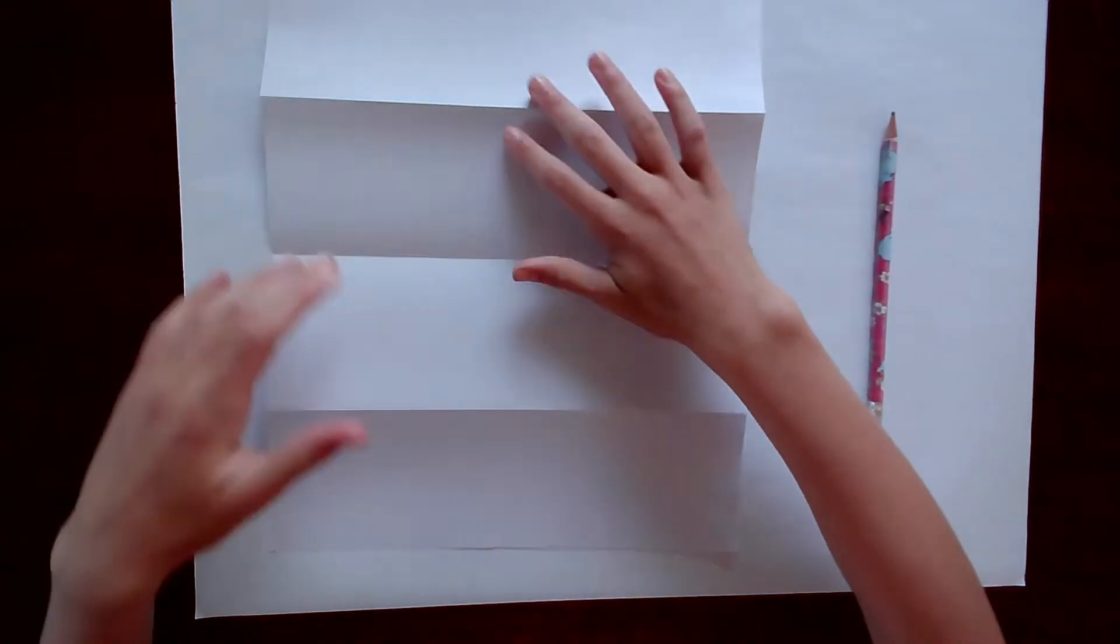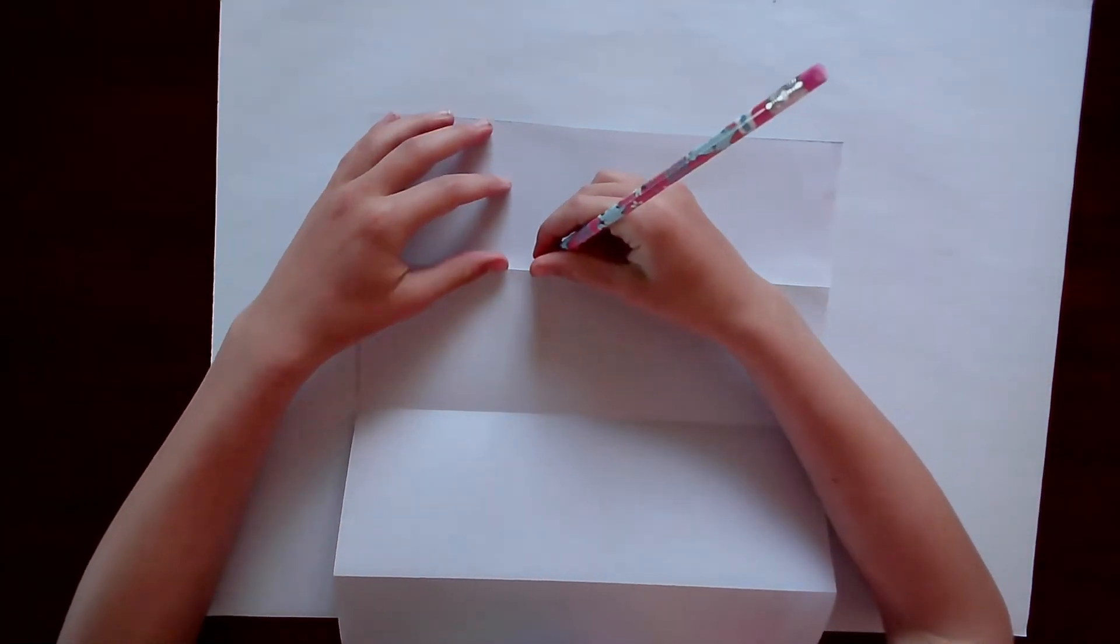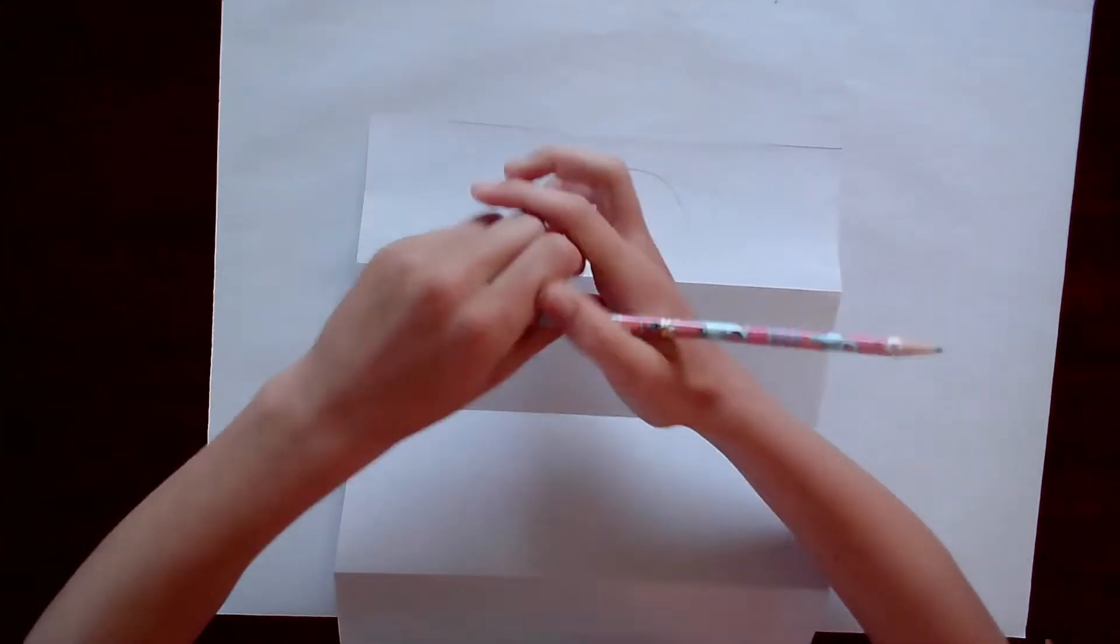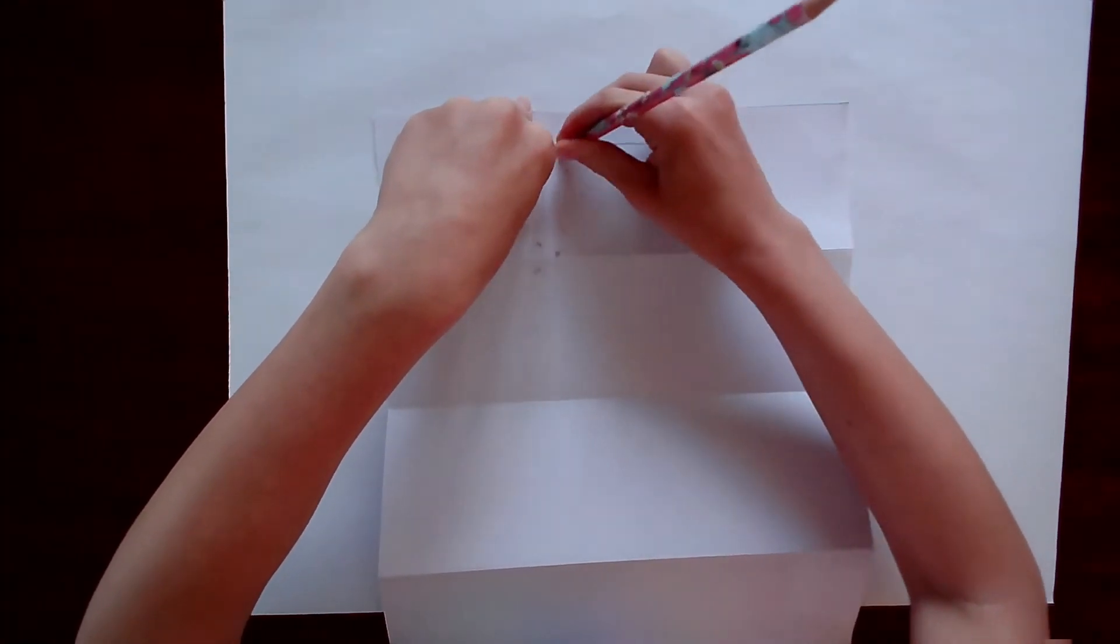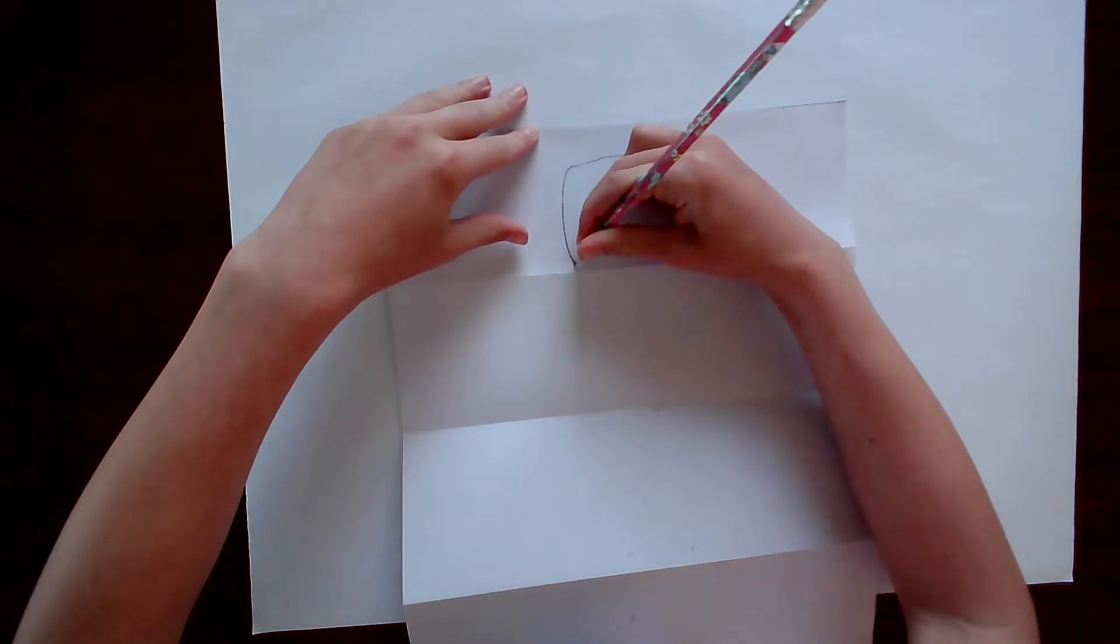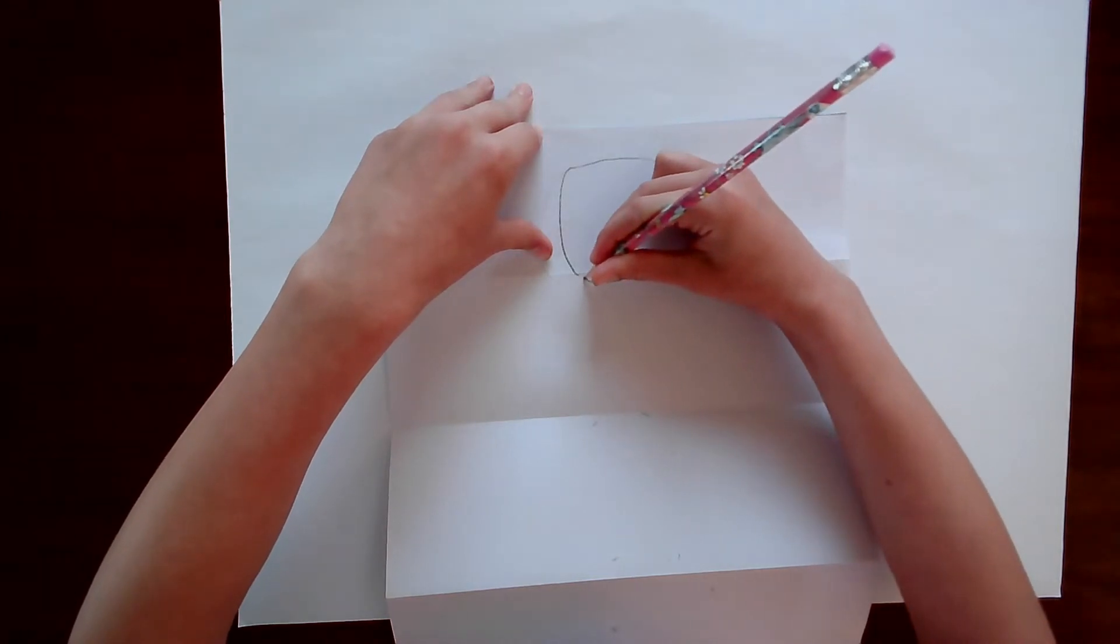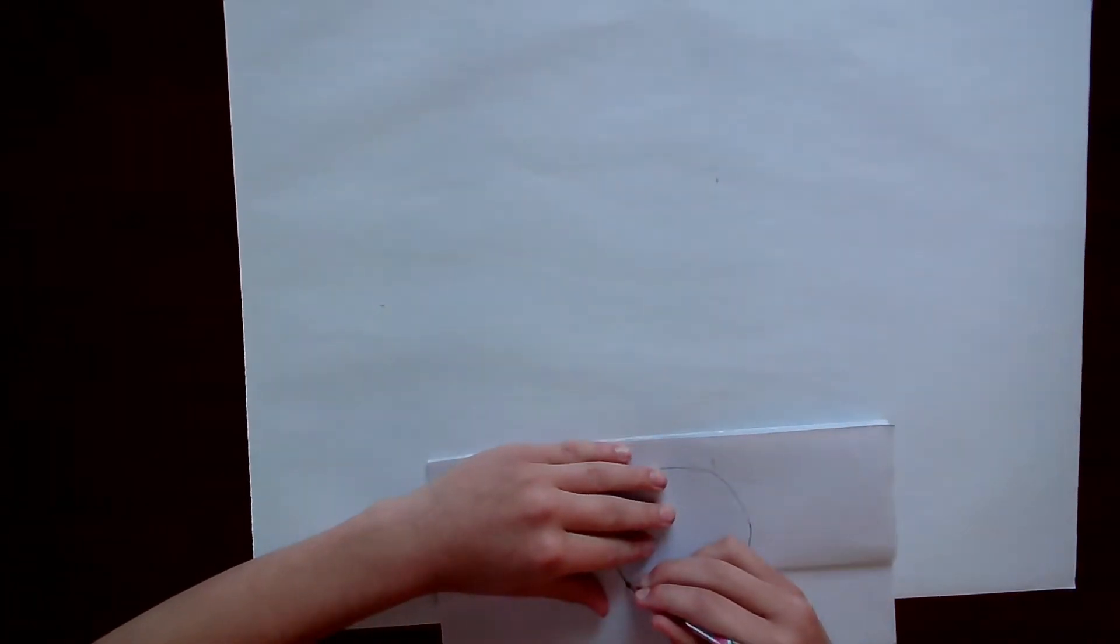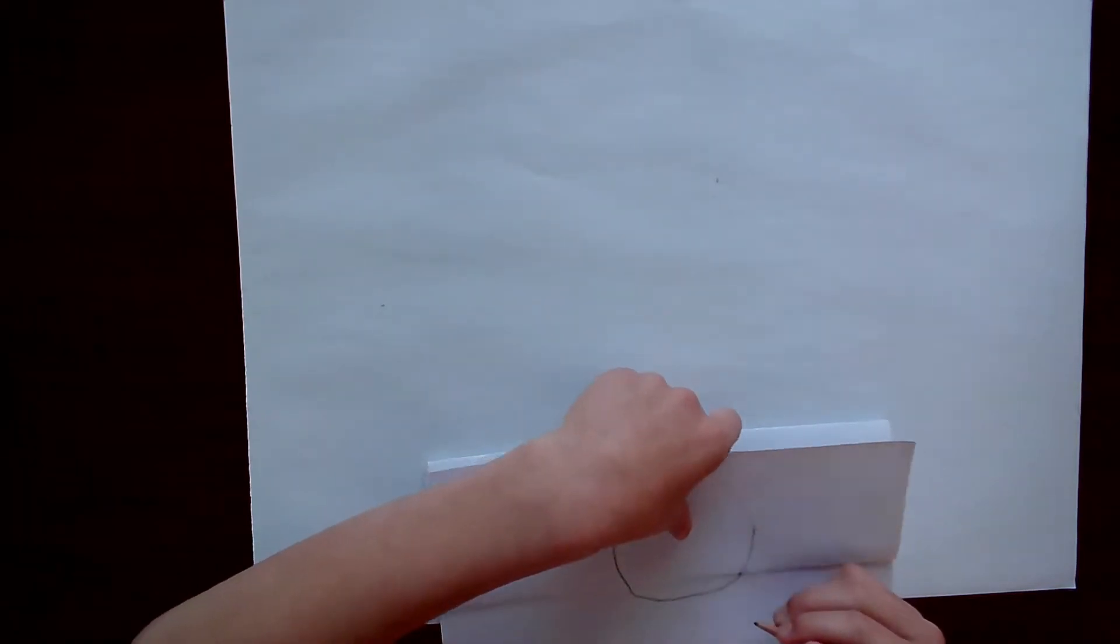So I'm gonna begin with the candy part. But I'm gonna need an outline of a circle to help me for the secret. Oops! Too wide!